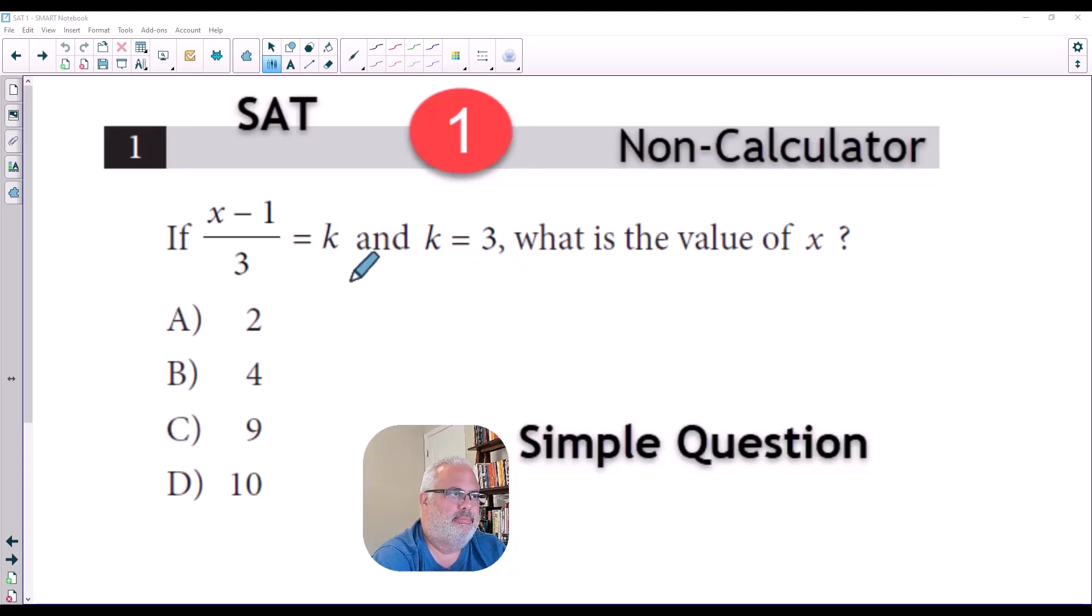Like this. X minus 1 over 3 equals 3 since K equals 3. Now this is a simple equation with only one variable.